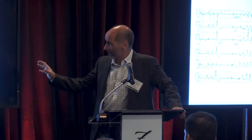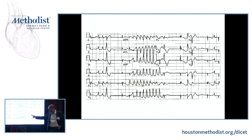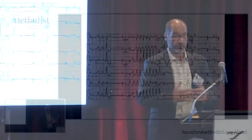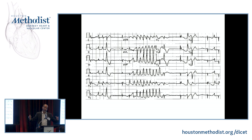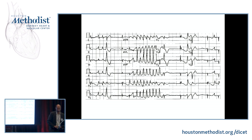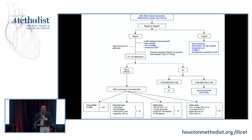Polymorphic VT in long QT always tends to happen in long-short sequences. When you have a long beat-to-beat interval, the beat that follows the long R-R interval will have a massively prolonged QT. So when you have long QT, it is long all the time, but particularly prolonged after pauses. It is after pauses, when you have the massively prolonged QT, that you will have an early afterdepolarization triggering polymorphic VT. You want to catch it before it deteriorates to VF.